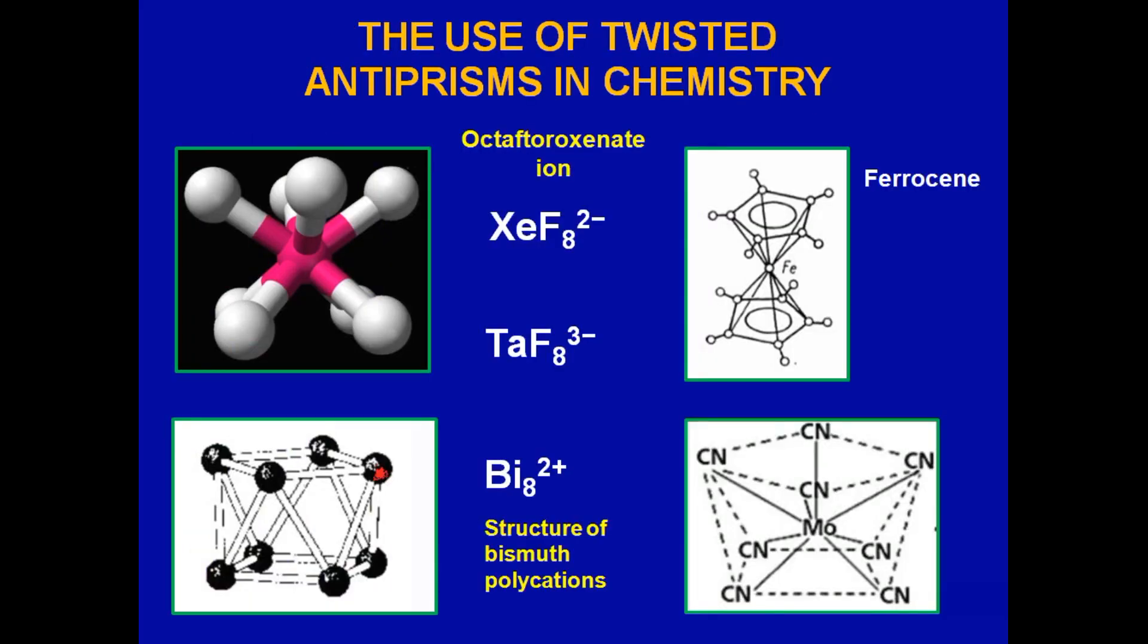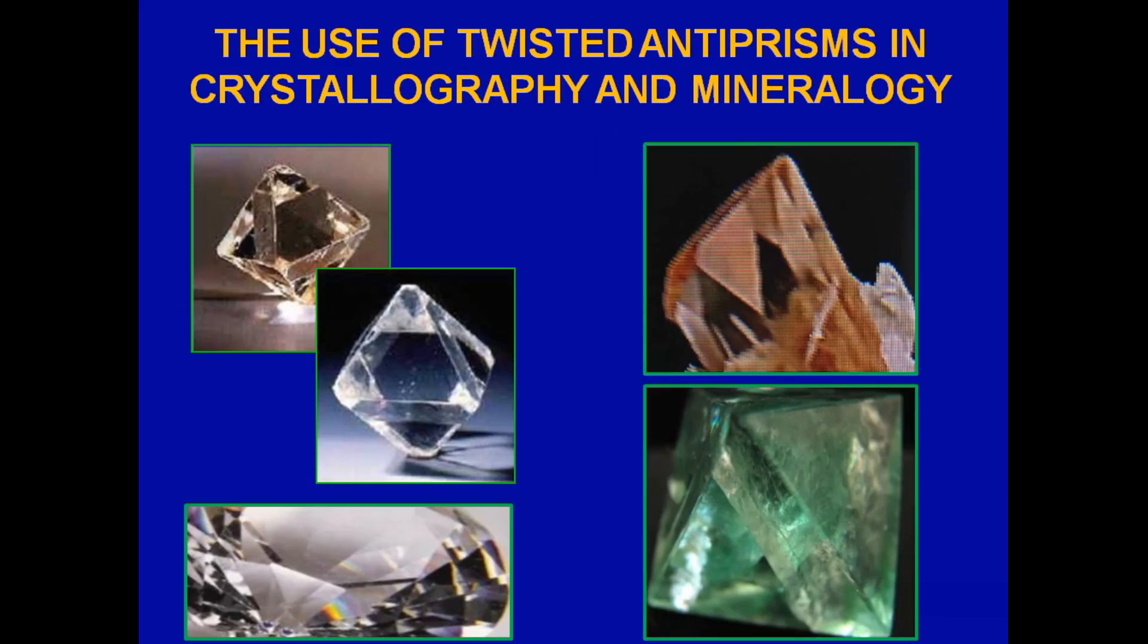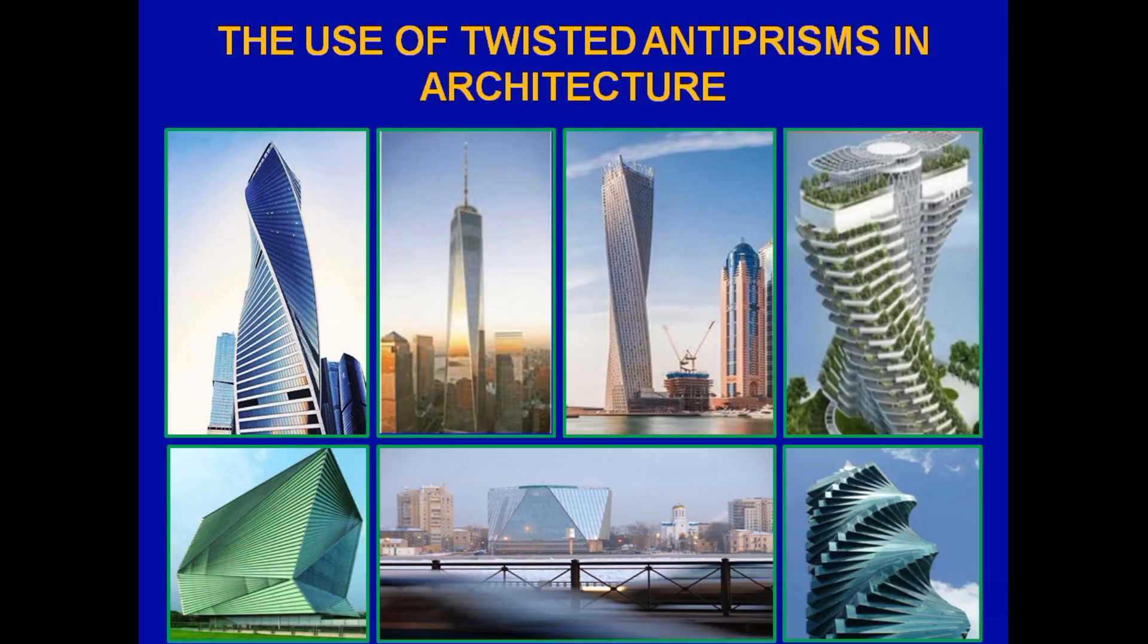Polyhedra of different types are used in architecture, art, and in various fields of sciences and technologies. In recent years, twisted anti-prisms, the geometric properties of which have been little studied, are widely used for modeling in physics, chemistry, crystallography, biology, and architecture.